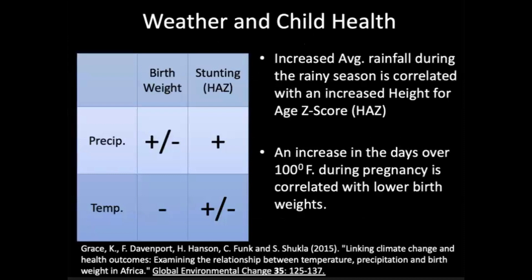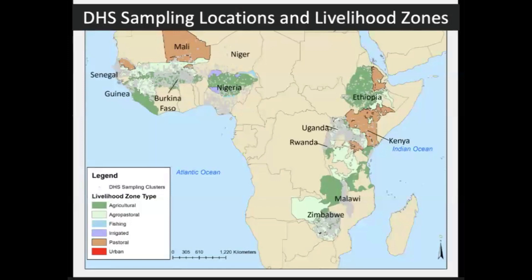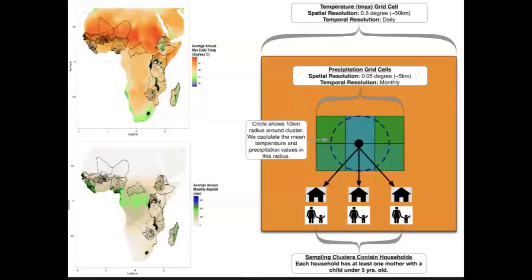Just an example from some of my own work: we were looking at birth weights and height-for-age Z-score — a measure of child stunting — and we wanted to know the degree to which heat exposure in utero was influencing birth weights. This was done with DHS data; each gray dot is a DHS sampling point. We were looking specifically at sub-Saharan African countries that were of interest to FEWSNET, looking at average annual daily maximum temperature and average annual monthly rainfall.